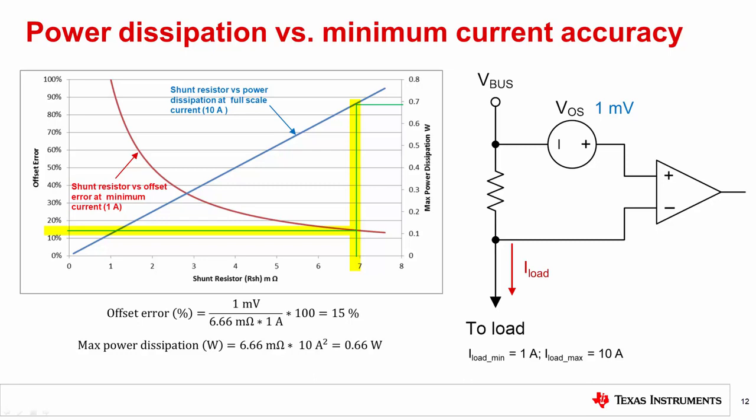However, this choice will cost us about 0.66 watts of power dissipation at full scale. A higher power dissipation requirement will drive up the size and the cost of the shunt resistor as I will show later. So there is a trade-off to be made. In this case, 5% less error in exchange for 32% more power dissipation and possible increase of the resistor size and cost. It's up to the circuit designer to determine which is more critical in their application.